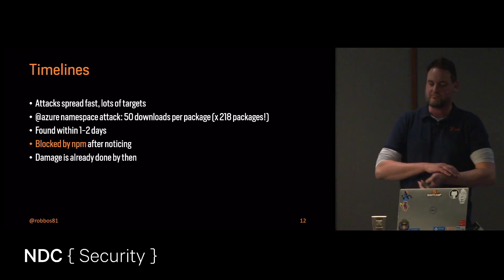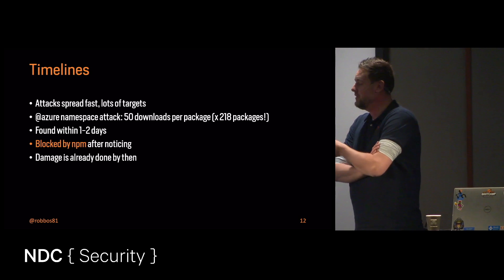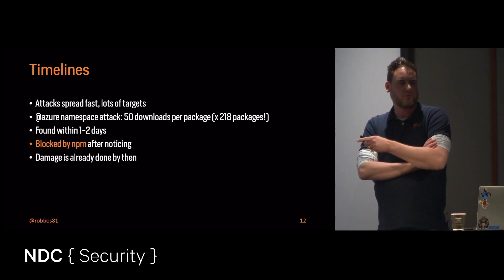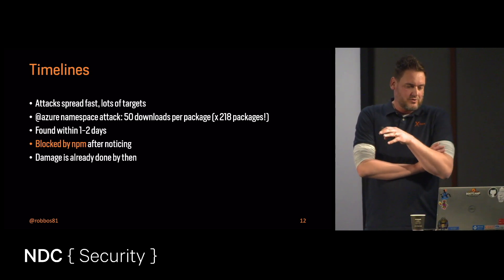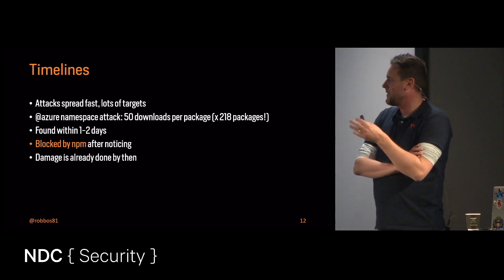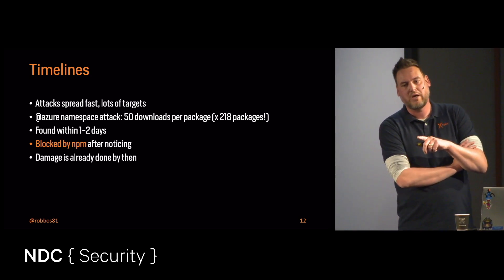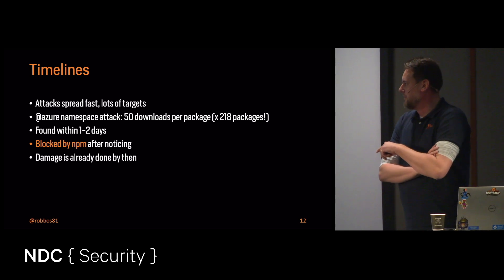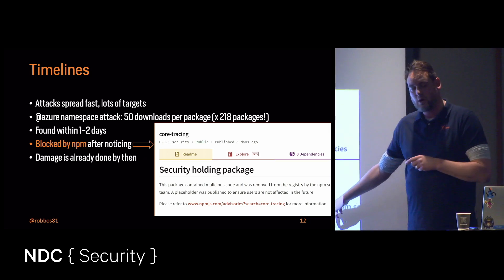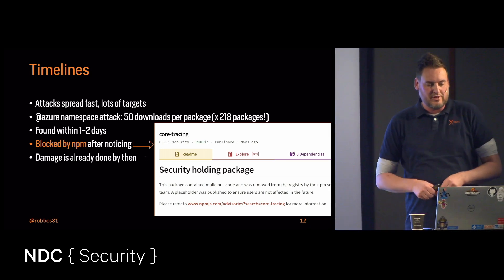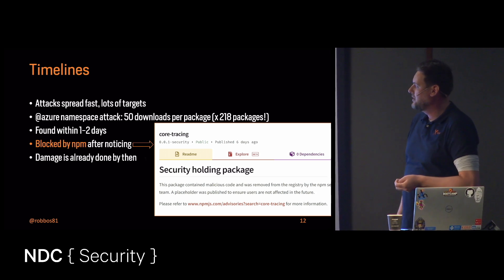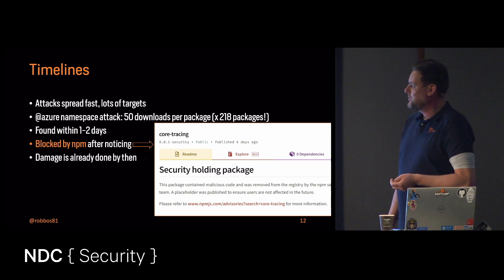These attacks spread really fast. In this case, 218 packages were published over the course of two days before somebody noticed. There were 50 downloads per package, meaning 4,000 users' pipelines already started installing this within one to two days. Luckily it was found, and npm started blocking these things by creating a security holding package — indicating why they're doing this because of an attack — so you get an error when pulling it in.